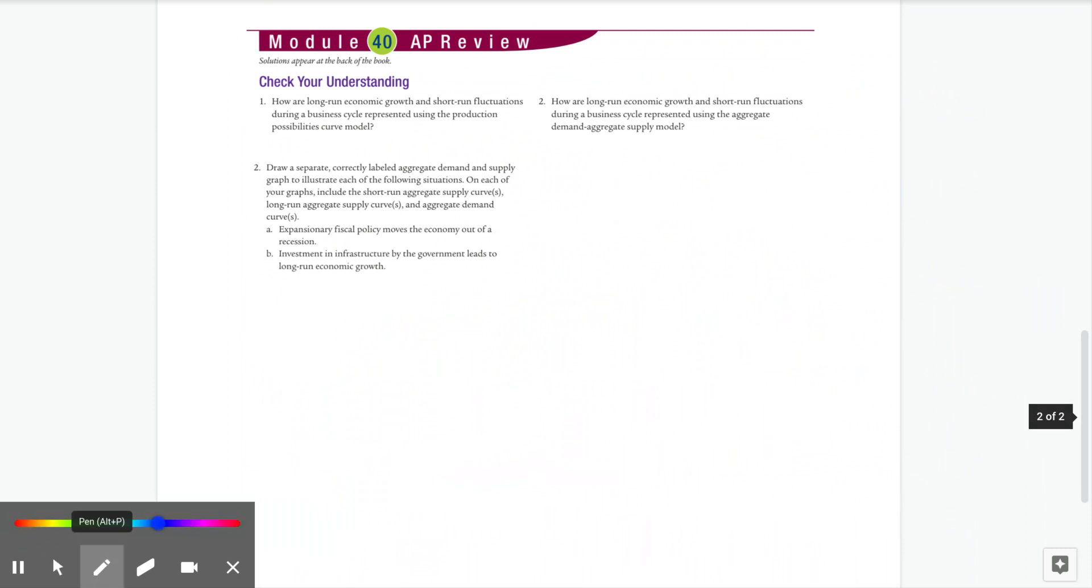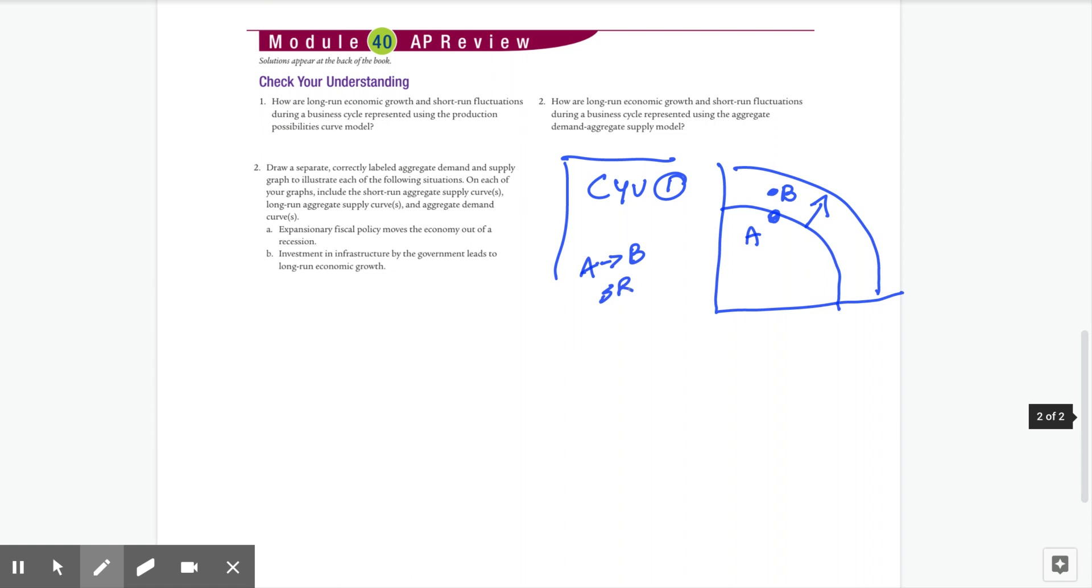Module 40 does a nice job of explaining the visual behind what goes on with growth. So our long run economic growth and short run fluctuations represented using the PPC. So we're going to start with the check your understandings right here. CYU number one, and we're just going to say we have a little PPC. And that's growth, right? And that's the production possibilities. And we'd say that if you go from A to B, that that's just a short run fluctuation. So A to B is the short run. And then from line, we'll say Y to Z is growth.